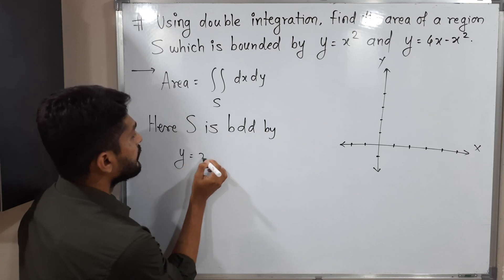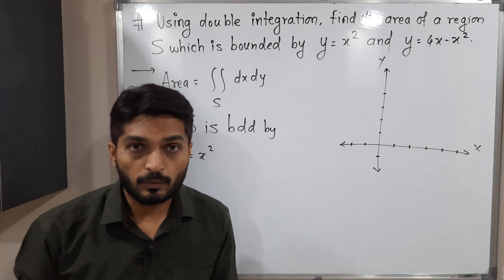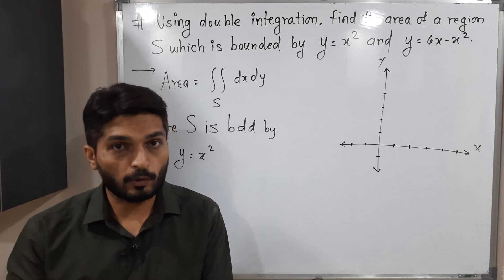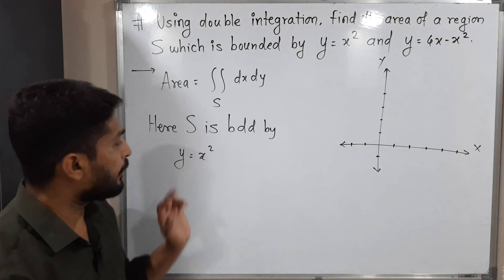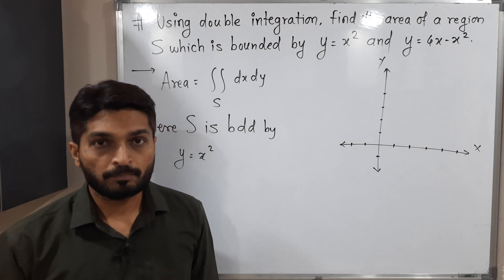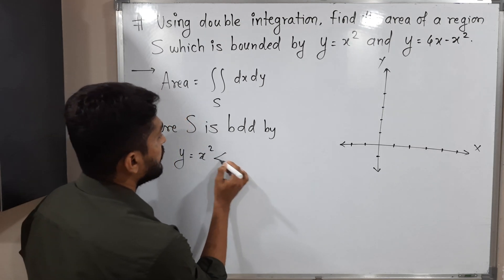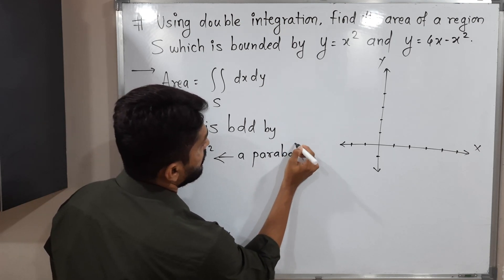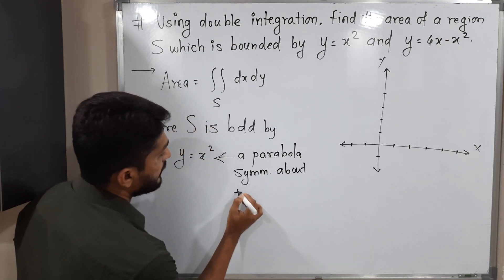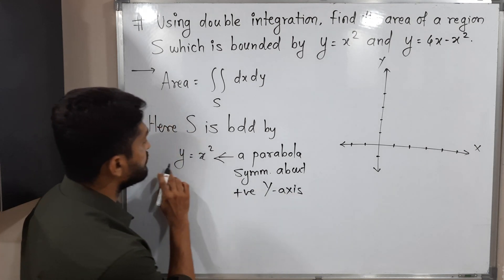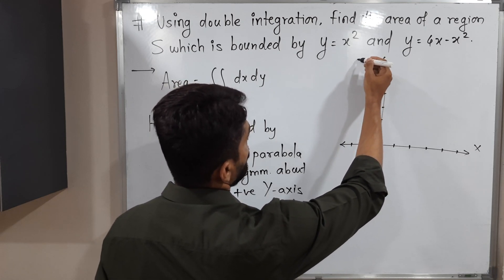The first equation is y equals x squared. The power of y is one and the power of x is two. When the highest power of one variable is two and the highest power of the second variable is one, it is a parabola. Since the power of y is one, the parabola is symmetric about the positive y-axis. So I'm drawing a rough sketch — it's a parabola symmetric about the positive y-axis.